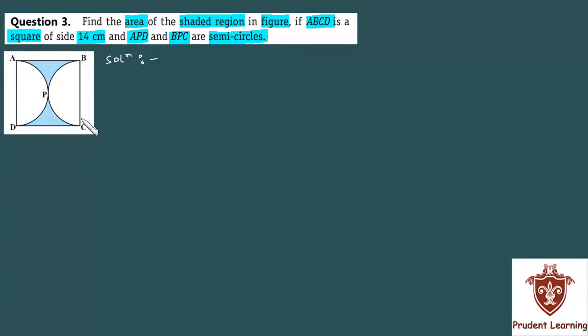In this question, the figure is associated with points A, B, C, D forming a square. APD and BPC are semicircles. You have to find this shaded region.